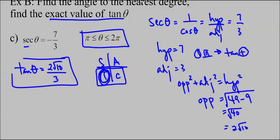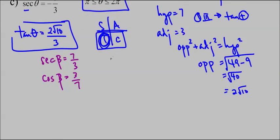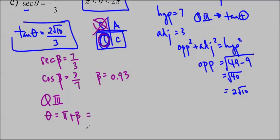We're also going to find the angle to the nearest degree. We're going to do exactly the same procedure. Sec beta equals positive 7 over 3, or cos beta equals 3 over 7, because sec isn't on your calculator. If you type that in, beta equals 0.93. Usually we would say cos is negative so it's in quadrant 3 or 2, but because of this range pi to 2 pi, we know it can't be in quadrant 2, so it will only be in quadrant 3 with one solution. In quadrant 3, theta equals pi plus beta, which equals 5.35 radians.